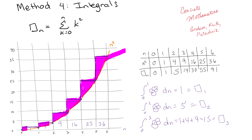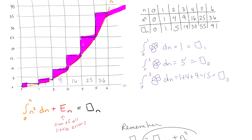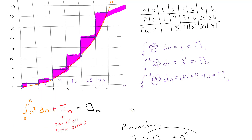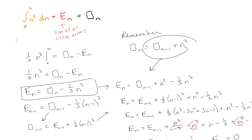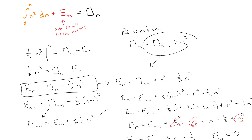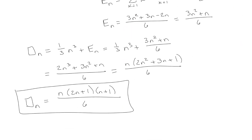So what we did is we took the sum, graphed it, and estimated it using the n squared integral. We recognized the function equals the integral plus some unknown error. Then we used algebraic tricks to isolate that error, found a closed form for it, plugged it back in, and the algebra all came out right — giving the same answer as before. The whole point of this lecture series is to show there are many different ways to solve the same problem.